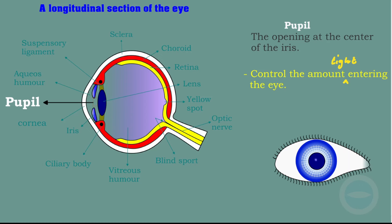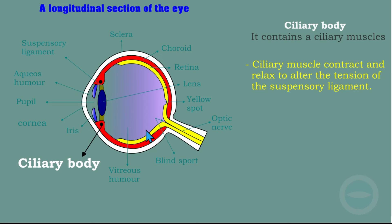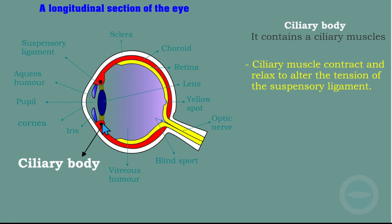The next part is the ciliary body. The ciliary body contains the ciliary muscle, and this entire section is the ciliary body. Its function: the ciliary body contracts and relaxes to alter the tension of the suspensory ligaments, thereby affecting the shape of the lens.